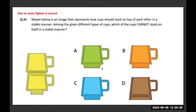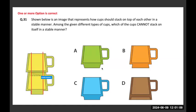Shown below is an image representing how cups should be stacked on top of each other in a stable manner. Among the given different types of cups, which cannot stack itself in a stable manner? When I observe the stacking position, the base of the cup — when I extend that line outside — happens somewhere here. You can only stack cups when this base is able to fit clearly inside the mouth of the cup.